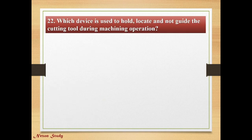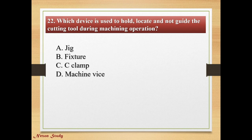Question: Which device is used to hold, locate, but not guide the cutting tool during a machining operation? Options: jig, fixture, clamp, machine vice. Correct answer is fixture.